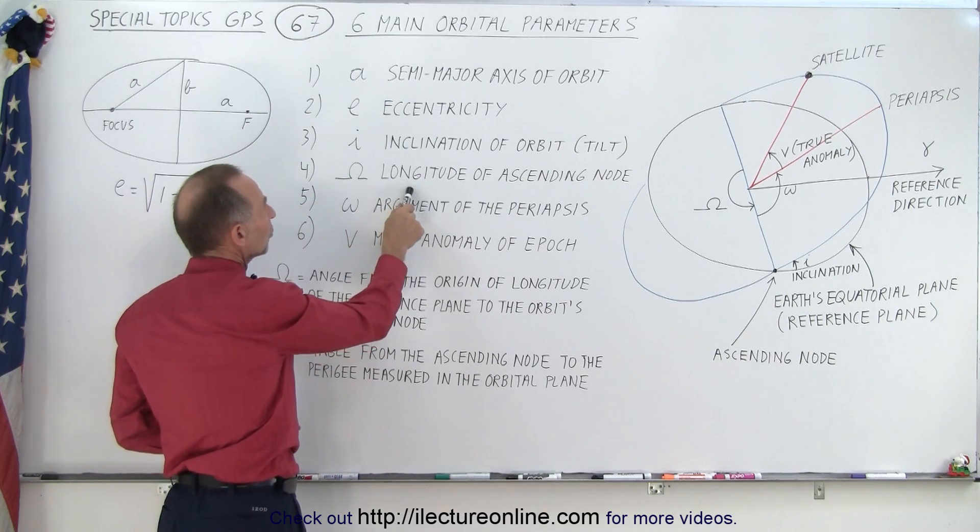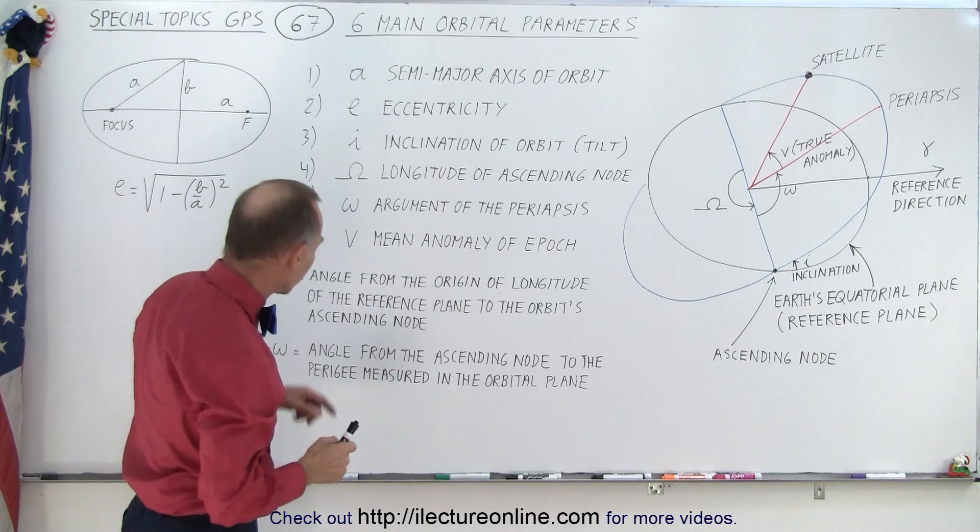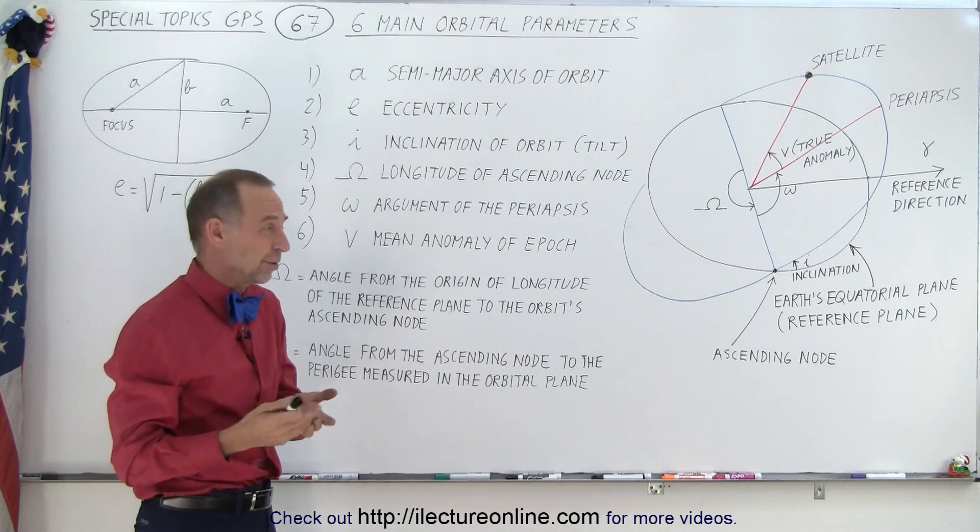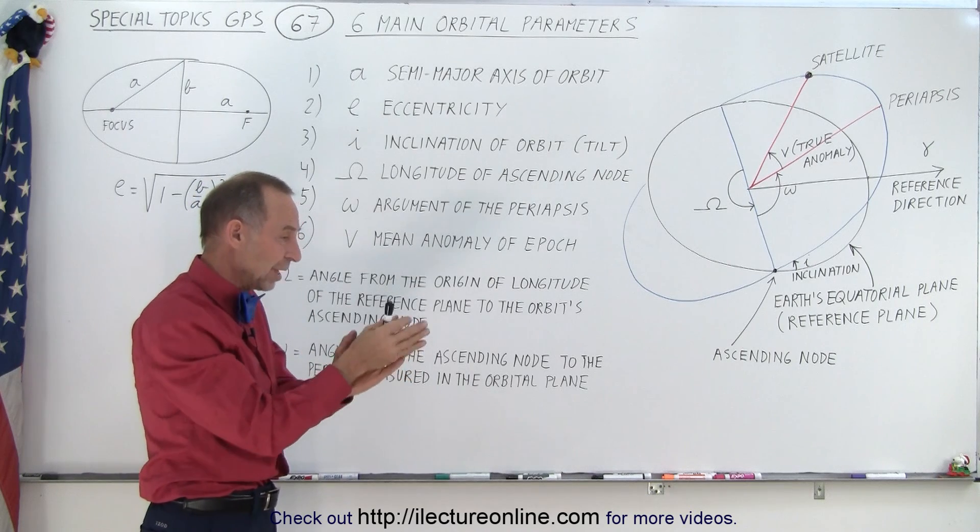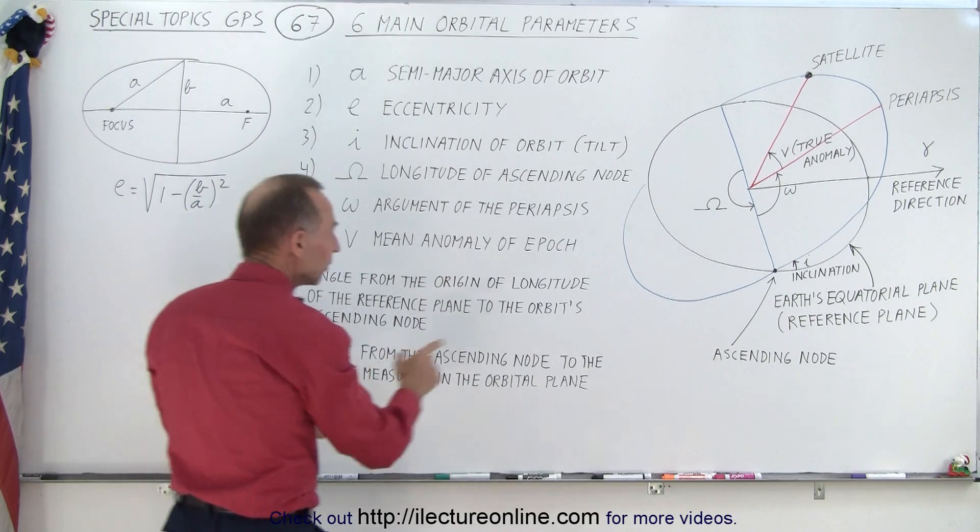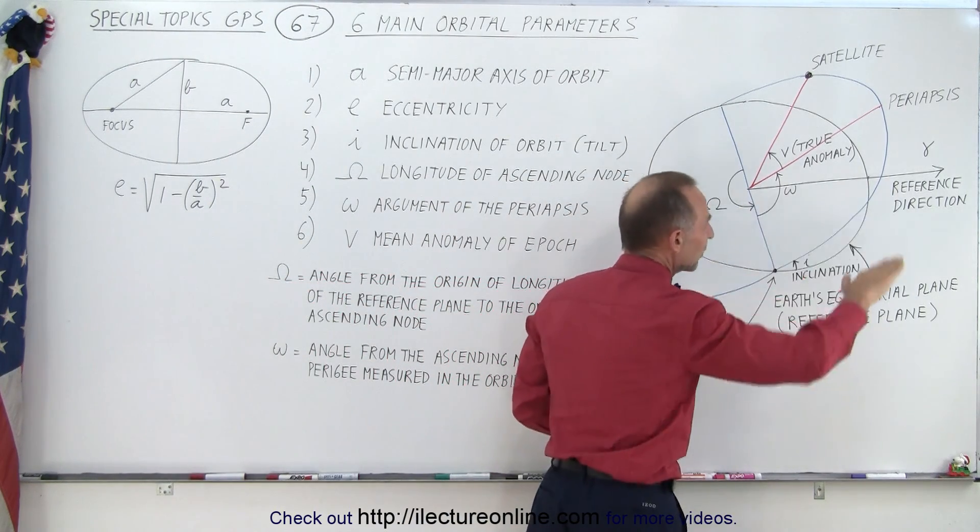The next parameter is the longitude of ascending node. What does that mean? Well, here you can see that it's the angle from the origin of longitude, that's the primary meridian. So it's the angle from the primary meridian all the way around until the point where the satellite pokes through the reference frame, the Earth's equatorial plane.